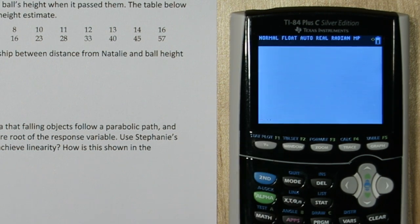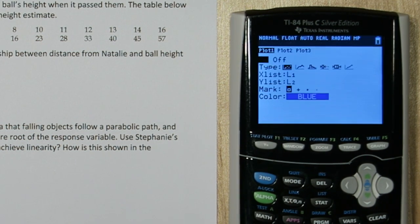Now press 2nd and y equals to get to the stat plot menu again. A residual plot has the explanatory variables, so list 1, as its x-axis.